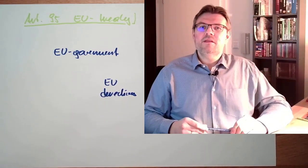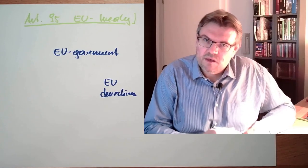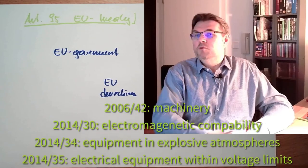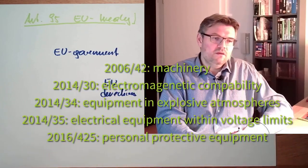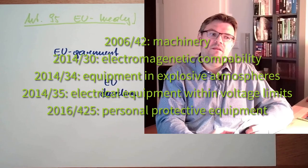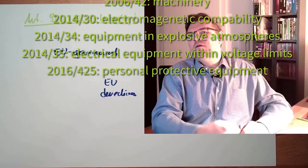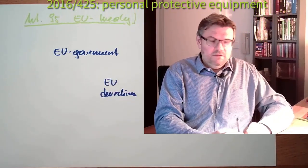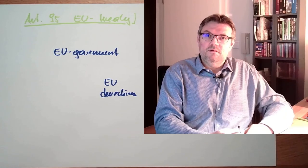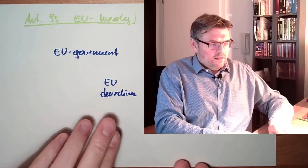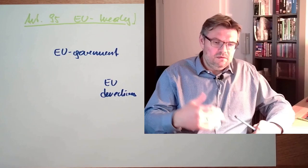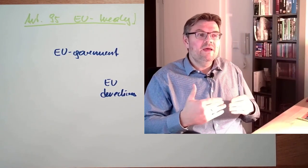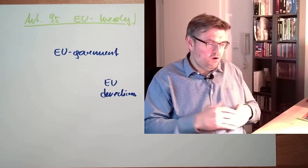These are EU directives. There are different types of EU directives — for instance, there is a directive for machines and safety, a directive for low voltage, a directive for electromagnetic disturbances. There are a lot of European Union directives, and these are issued by the EU government.